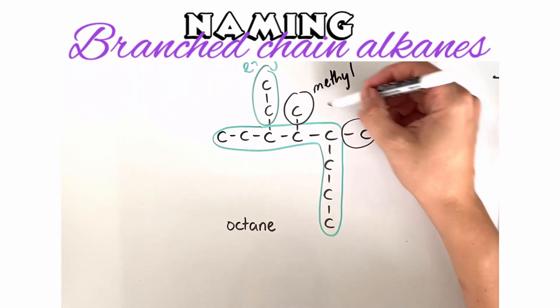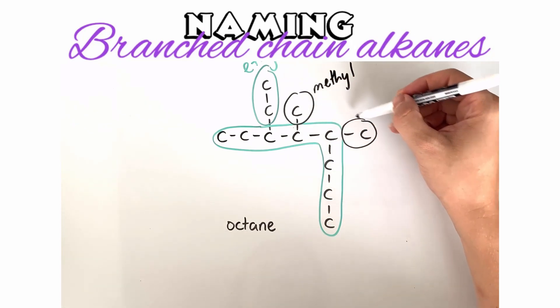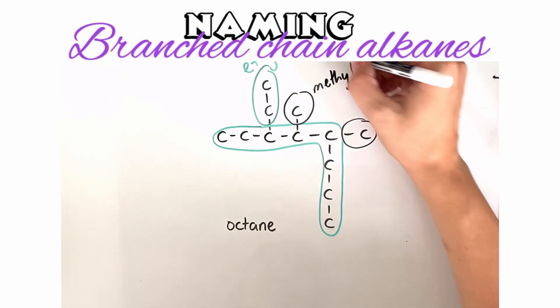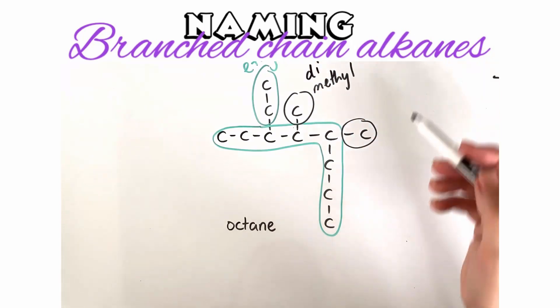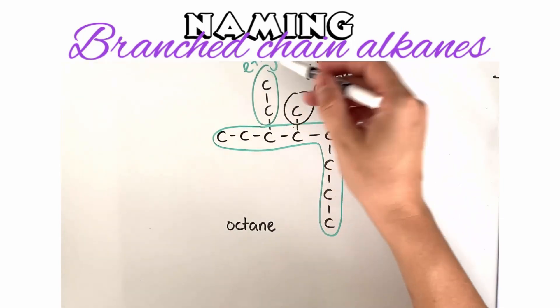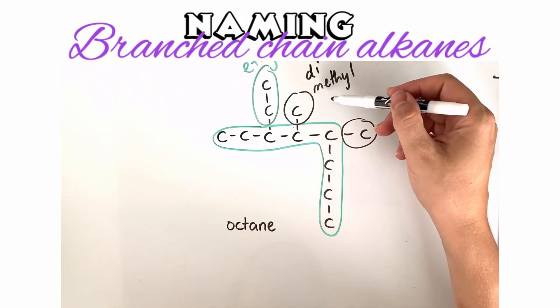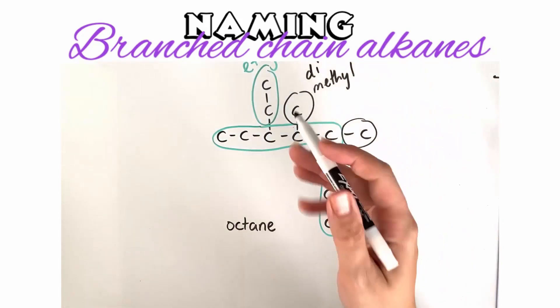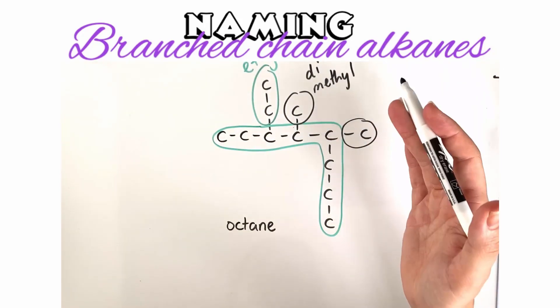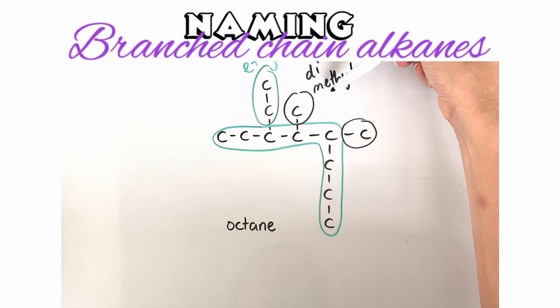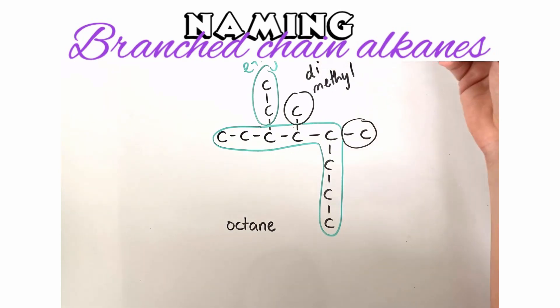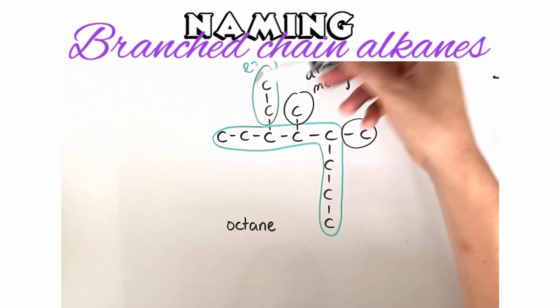When naming these, we list them in alphabetical order if there is more than one type of branch. Remember that the prefixes di-, tri-, tetra- do not count in the alphabetizing. So ethyl comes before methyl. Because we have two methyl groups, this will be dimethyl — but 'di' doesn't count in our alphabetical ordering. So this molecule starts with ethyl, then dimethyl.